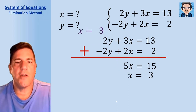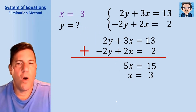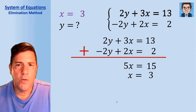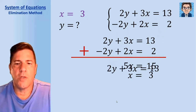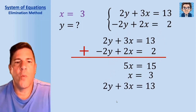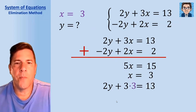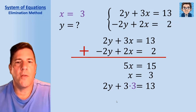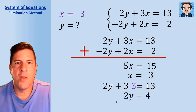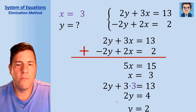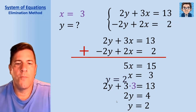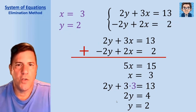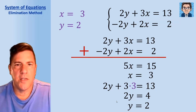Now we've got to find the y as well. Take one of the equations — I'll use the first one since it looks a little easier. We know x is 3, so put 3 in for x. Multiply 3 by 3 to get 9, subtract that from both sides to get 2y equals 4, then divide both sides by 2 to get y equals 2. So x equals 3 and y equals 2 — those values make both equations true and that's the solution to this system.